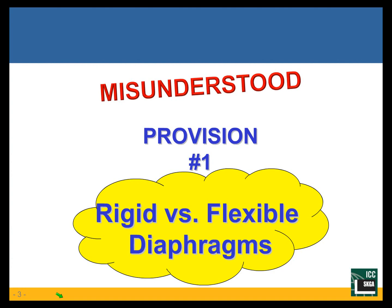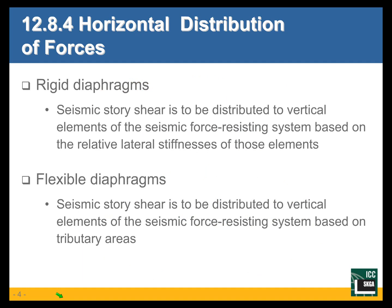The very first topic we chose is rigid versus flexible diaphragm. This topic is important because when horizontal forces are imparted to a structure due to wind or earthquakes, and you have multiple lateral force resisting elements — a couple of frames, three shear walls in the direction of the load — how is the load shared among those resisting elements? The answer depends on whether the diaphragm is rigid or flexible.